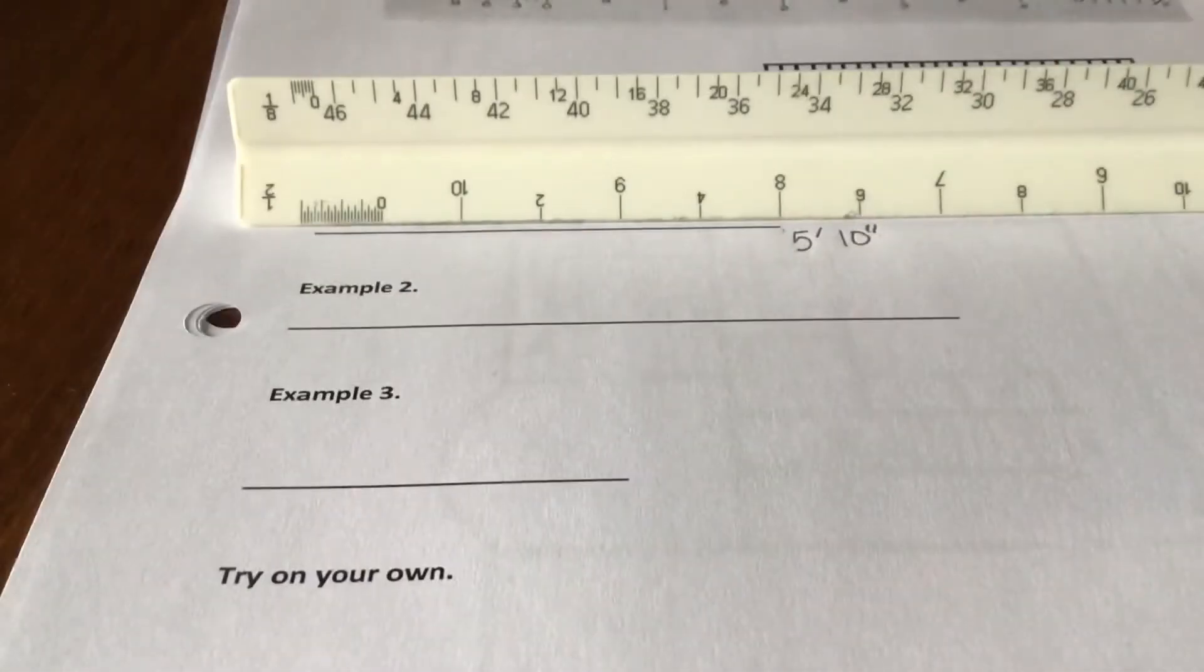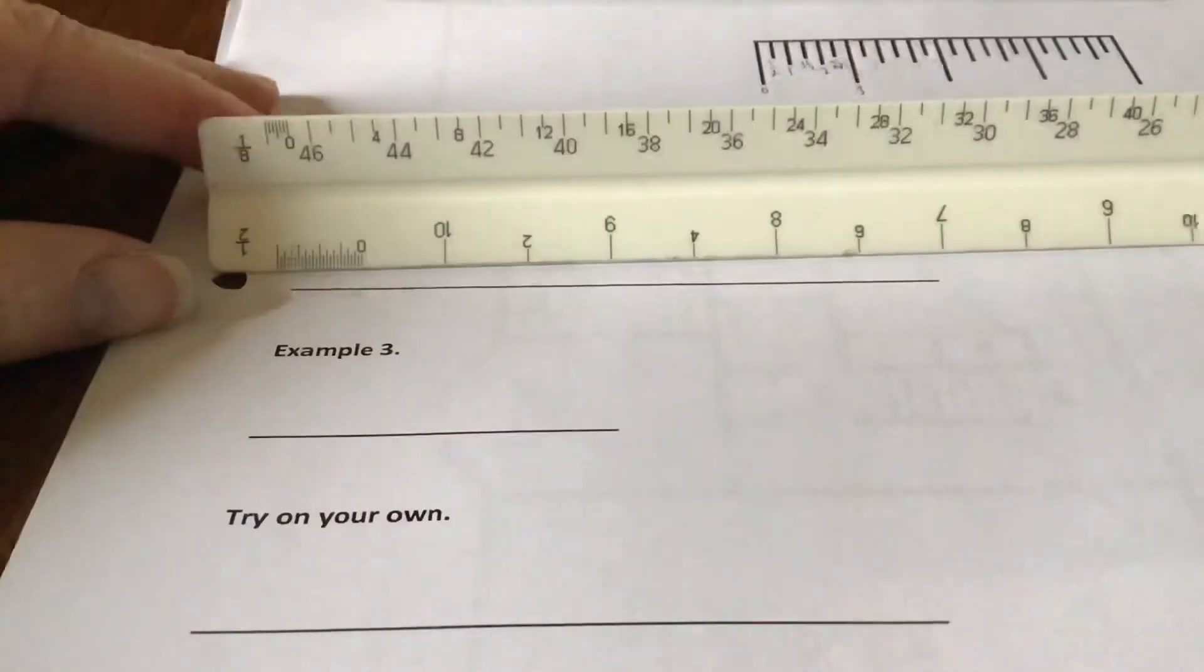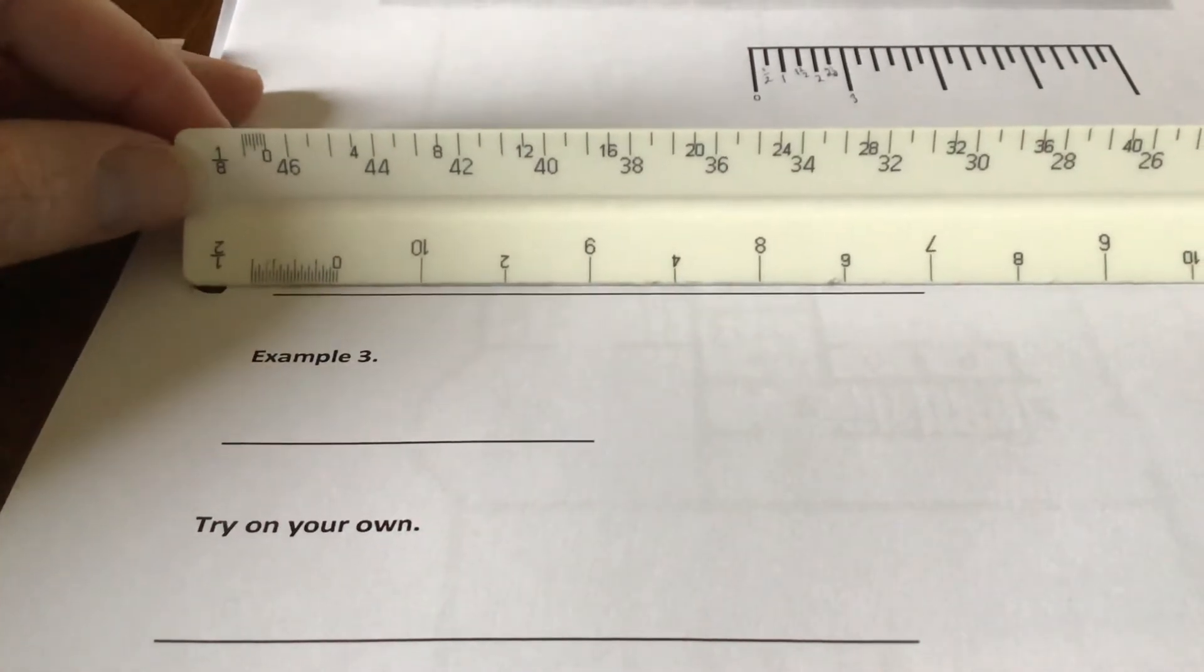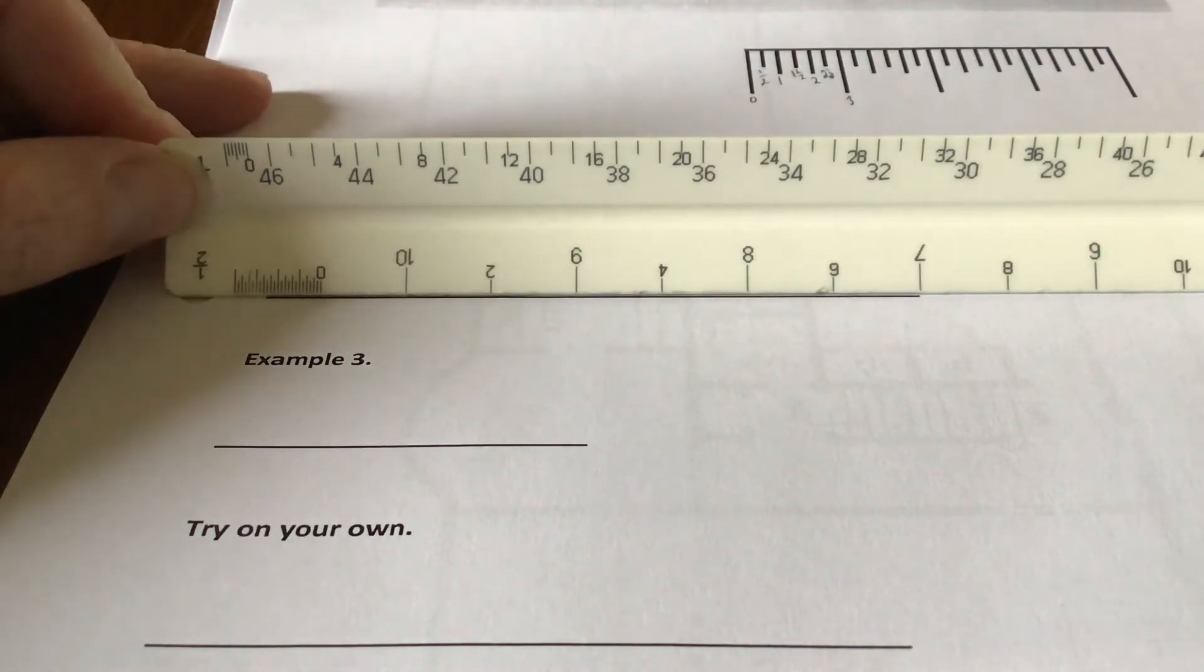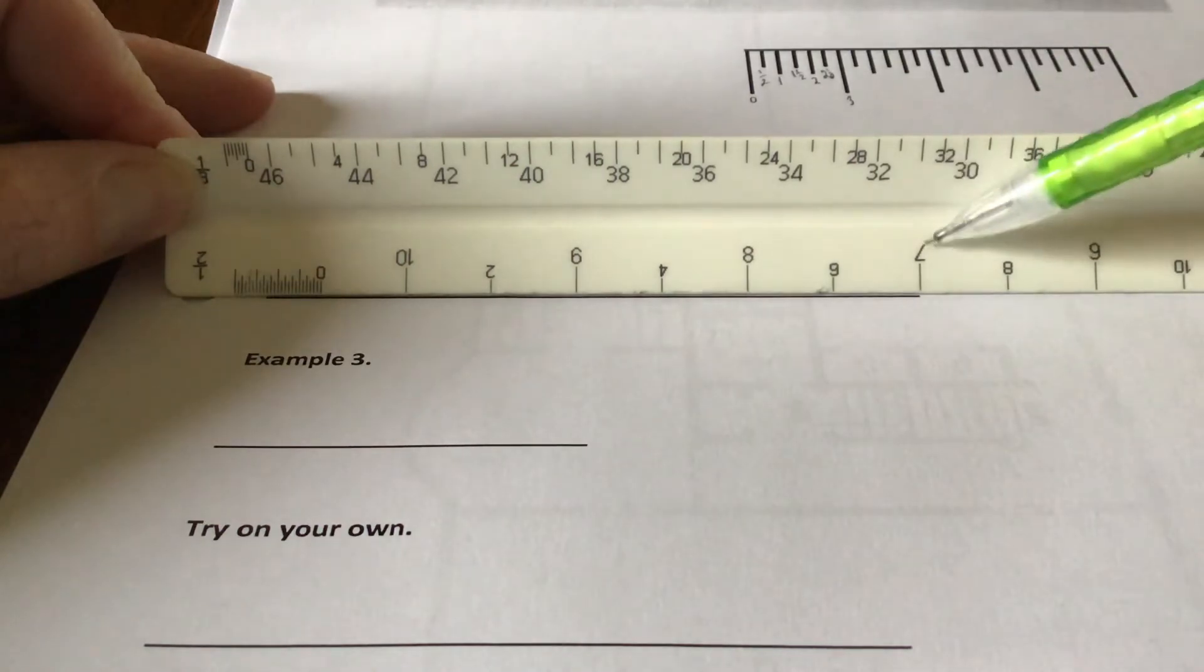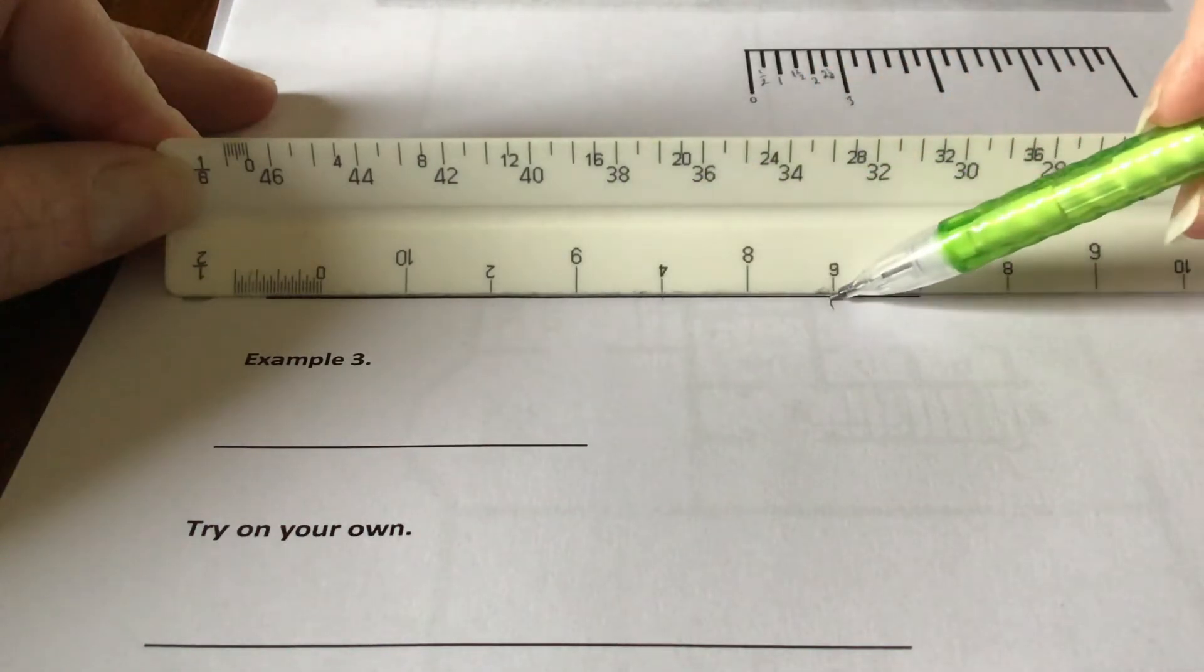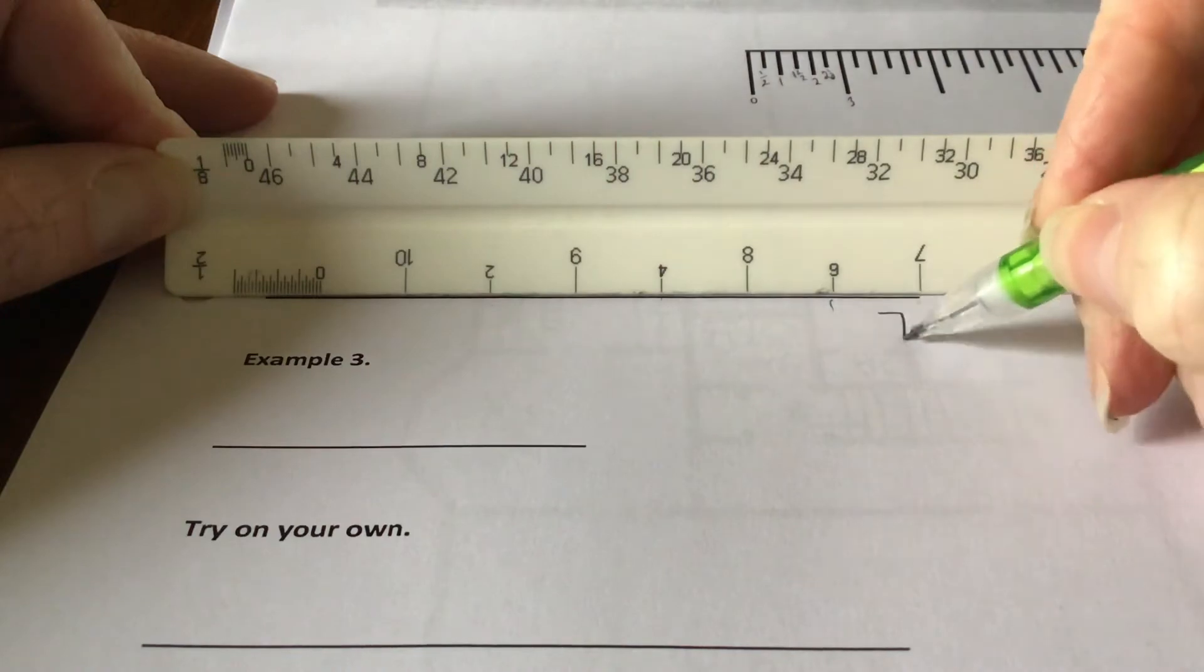Alright, let's do example number 2. So we pick a line, pick a spot to line up with on the far end on the foot section. So that it ends in the little inch section over there. So I'm going to line up with that number 7. That 7 is not necessarily 7. We have to look at the smaller numbers. See 2, 4, 6. This would be in between the 6 and the 8, which actually is 7. So this would be 7 feet.